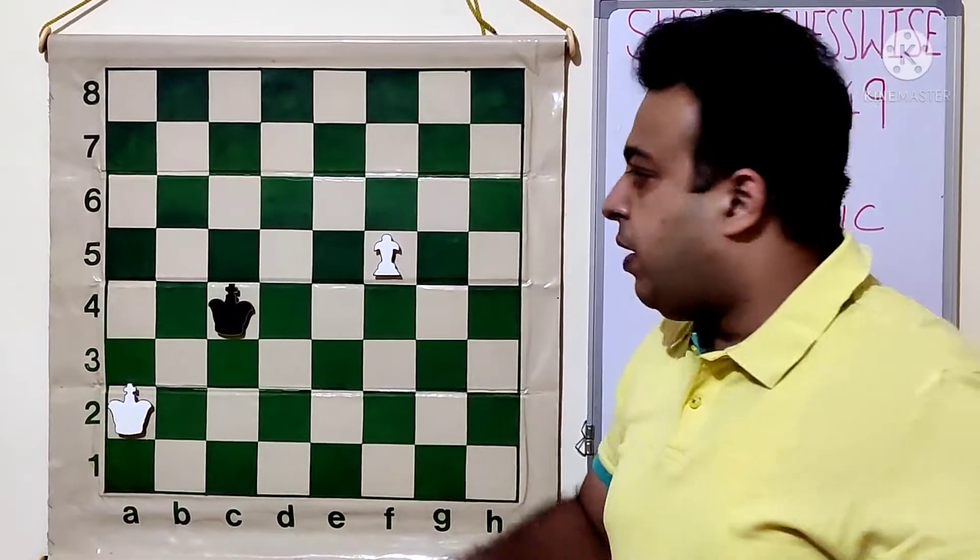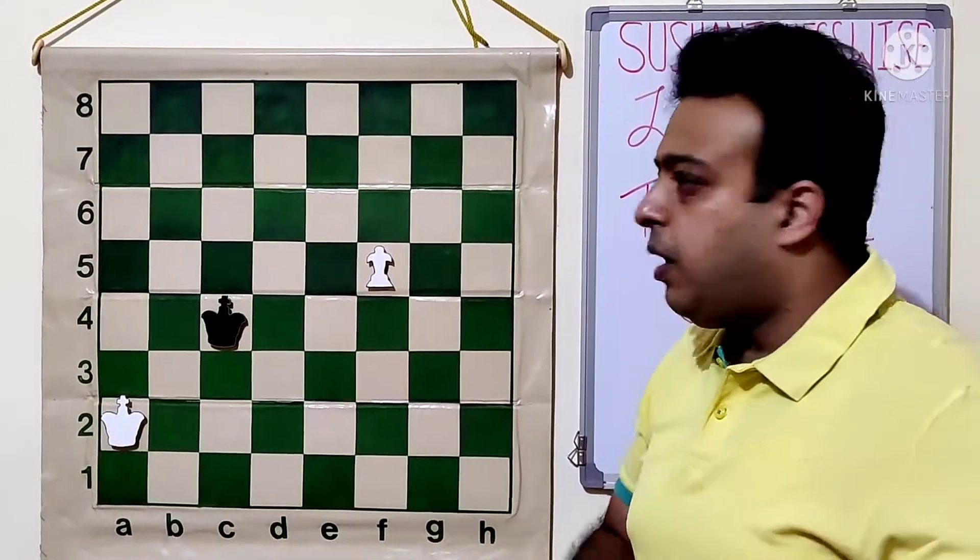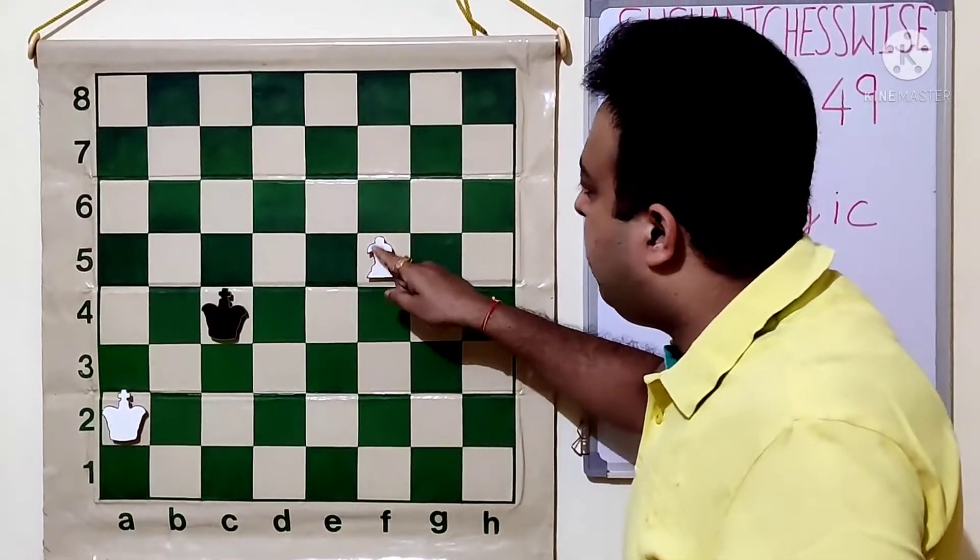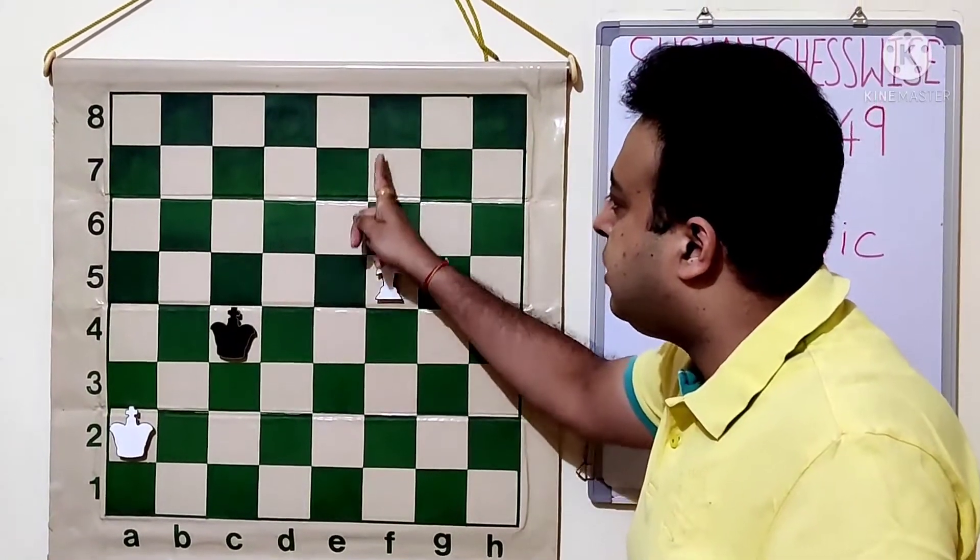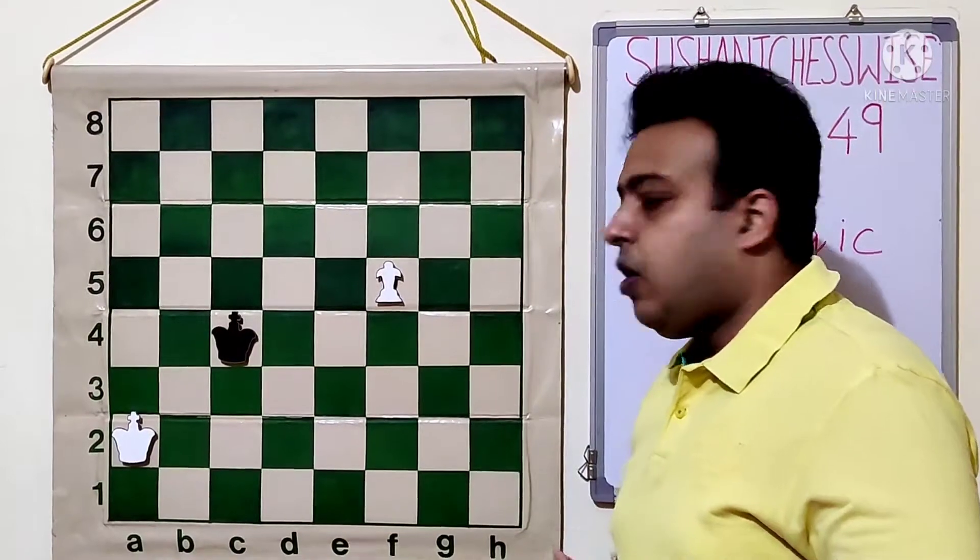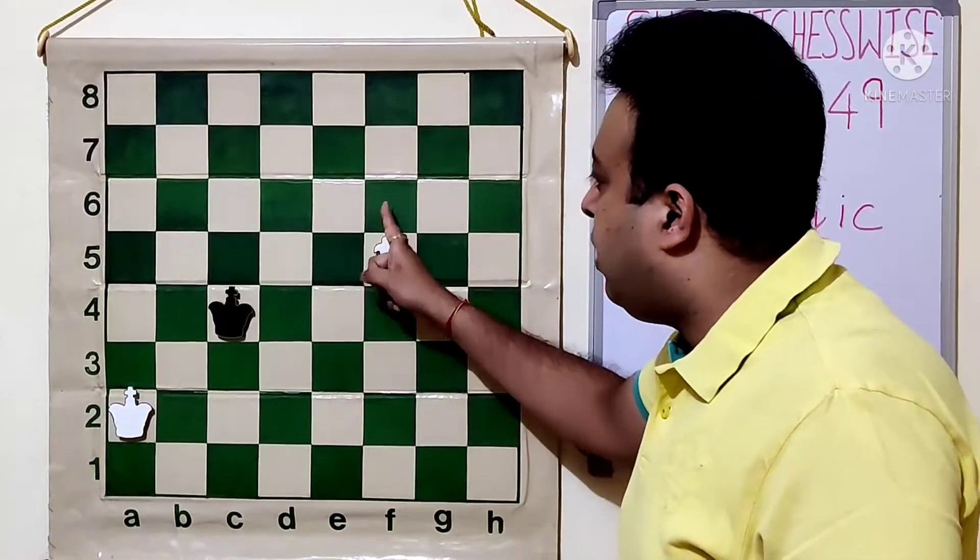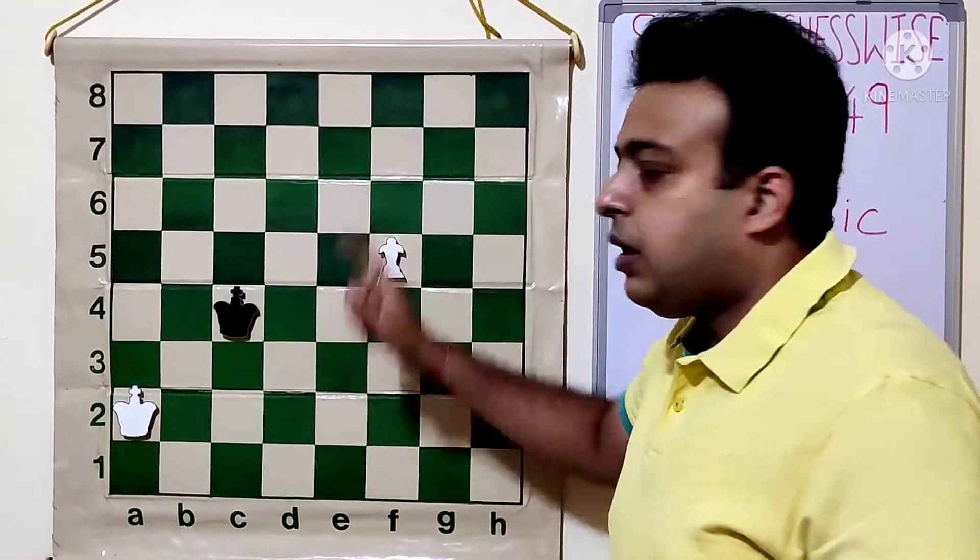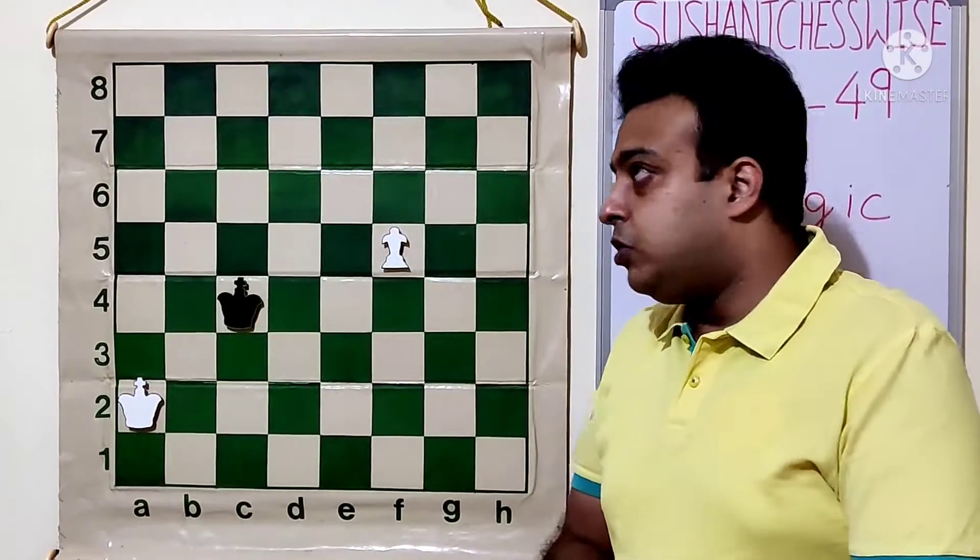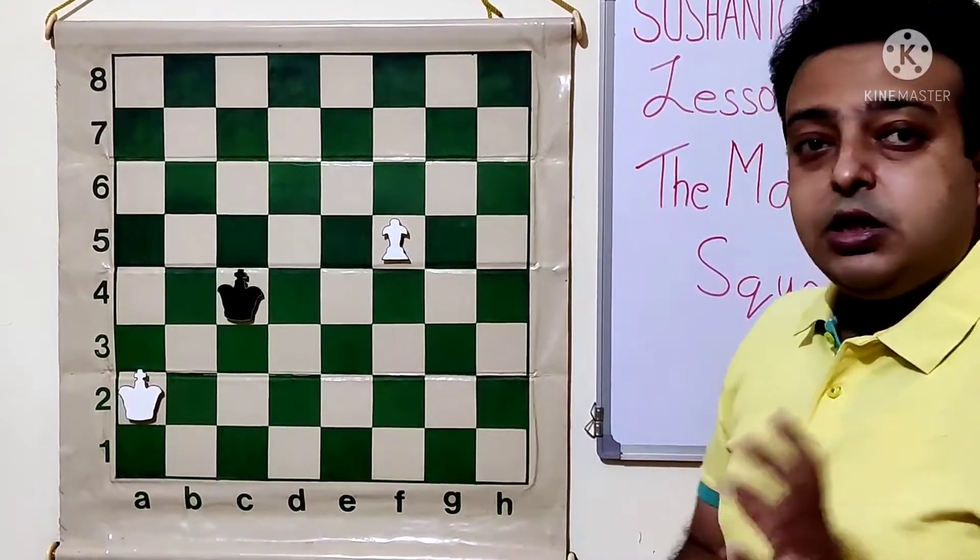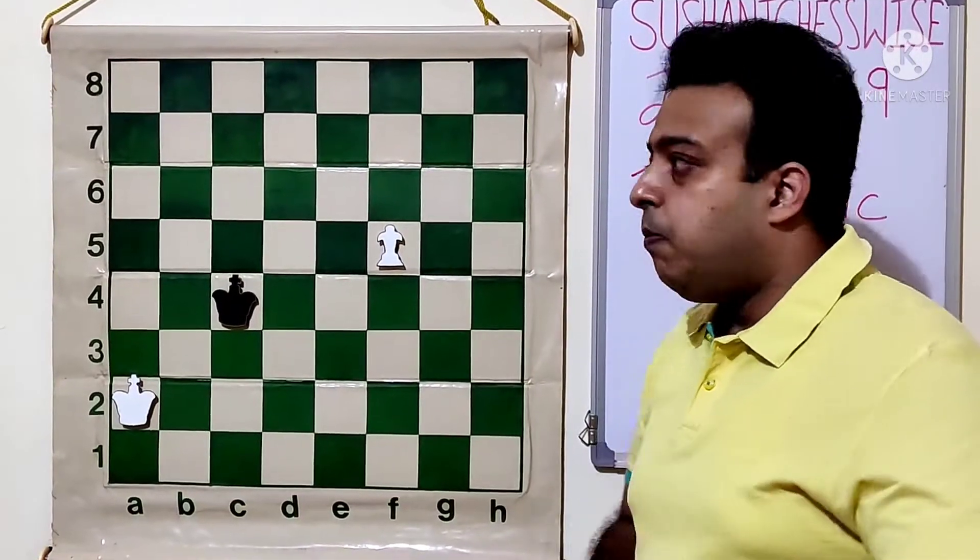So how to identify whether the king can stop the pawn? See even if the king is away, generally we'll have to calculate. Pawn goes to F6, then king comes to D5, pawn moves to F7, Ke6 and the pawn queens. Or else if it is black to play, we'll calculate king D5, F6, king E6, F7, king takes F7. So we have to calculate around three, four or many moves. But by just looking at the position also, we can come to know how to stop the pawn. This is very simple technique.